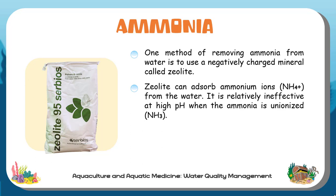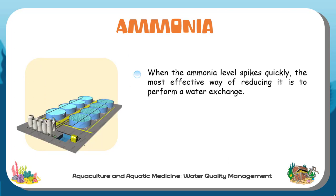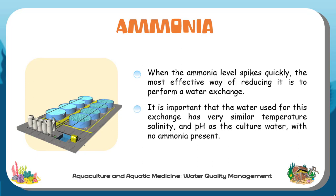Additionally, high hardness and salinity can use up all the binding power of zeolite, making it ineffective for removing ammonium ions. When the ammonia level spikes quickly, the most effective way of reducing it is to perform a water exchange. It is important that the water used for this exchange has very similar temperature, salinity, and pH as the culture water, with no ammonia present.